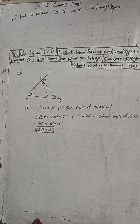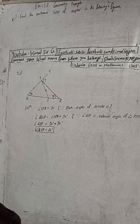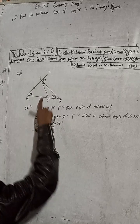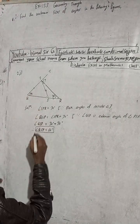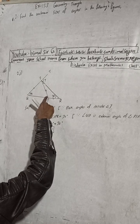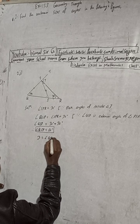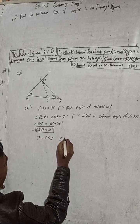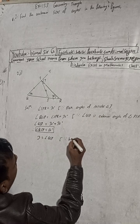Okay, angle QSP is 60 degrees. We got this angle as 60 degrees. Now, what is X equal to? X is equal to angle QSP. Why? Because these are the base angles of the isosceles triangle — same reason, base angles of isosceles triangle PQS.